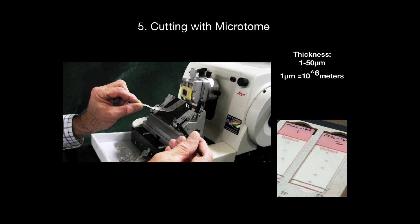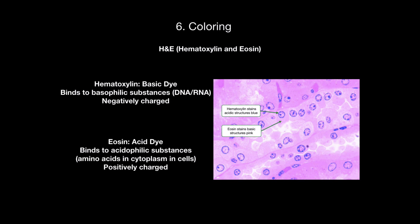You then need to cut the tissue block using a microtome and place it on a glass slide. After that, you need to color it. Hematoxylin and eosin — or H&E — is the most frequently used coloring method. Hematoxylin binds substances with a negative charge, just like the phosphate groups in DNA and RNA, while eosin binds substances with a positive charge, just like the amino acids in the cytoplasm. In this picture you can see the differences: hematoxylin stains acidic structures blue, like the DNA, and eosin stains basic structures pink, like the amino acids.